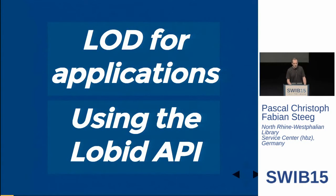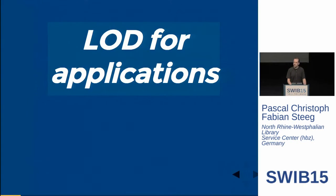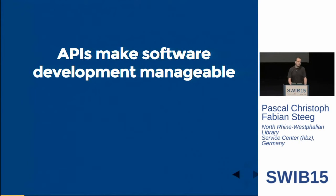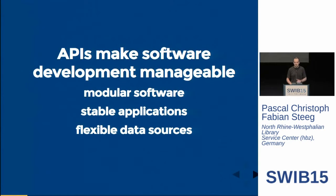So this talk is called LOD for Applications Using the Lobbit API, which stands for Application Programming Interface. Why would we want to use an API? Because LOD for Applications means building software, and APIs make software development manageable. They allow us to build modular software with stable applications where changes in parts of the software don't require changes in all the other parts — in particular, the applications. At the same time, APIs allow us to have flexible data sources.